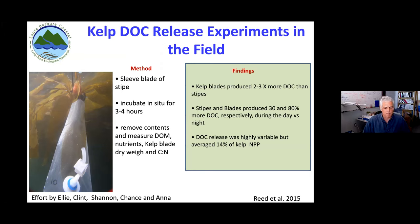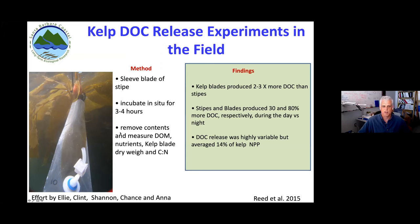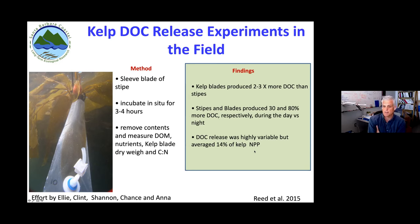Subsequent work led by Ellie Halewood, Clint Shannon, and later by Chance and Anna went out and tried to measure the release of DOC — DOC productivity — in situ using sleeve experiments. They would take polyethylene bags, sleeve a blade, incubate for several hours, then remove the bag and kelp and measure the amount of DOM produced. Main findings published in Reed et al. 2015 showed about two to three times more DOC produced in blades compared to stipes, and stipes and blades produced 30% and 80% more DOC respectively during the day versus night.